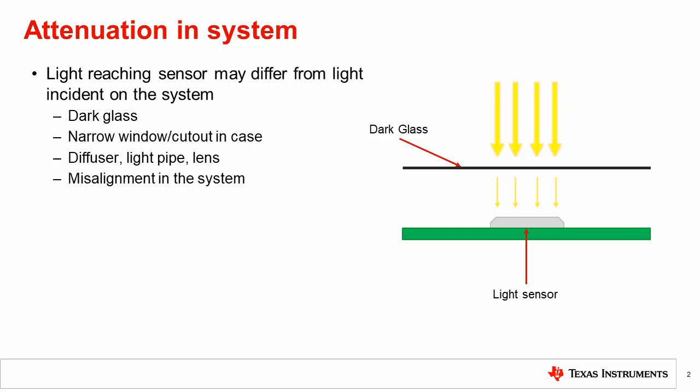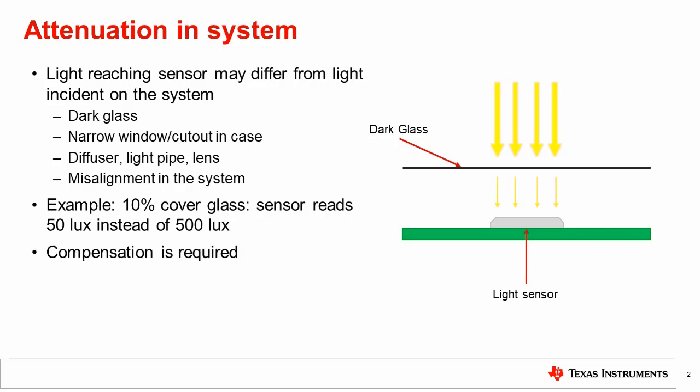For example, when placing the sensor behind a dark glass, the light intensity is attenuated. Using a 10% transmissive dark glass, if 500 lux is shined onto the system, the sensor will report around 50 lux. In this case, compensation is required to correct the sensor reading.